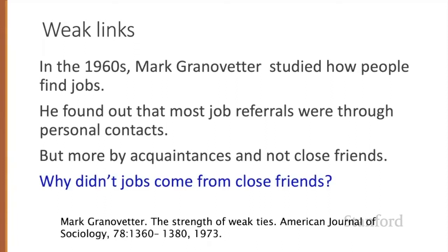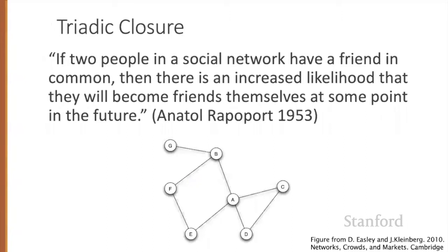Why didn't jobs come from close friends? To see the answer, it'll help to define some useful properties and mechanisms on graphs. One is called triadic closure. The idea comes from social network pioneer Anatole Rappaport, who suggested that if two people in a social network have a friend in common, there's an increased likelihood that they'll become friends themselves at some point in the future.